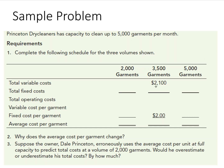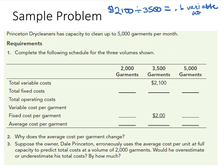What do we know about variable cost? The cost per unit does not change with variable cost. So we take the total variable cost of $2,100 and divide it by the volume of 3,500. That gives us 60 cents. So our variable cost per unit is 60 cents, and we can fill that in — the variable cost per garment is 60 cents regardless of volume, because variable cost per unit does not change with volume.